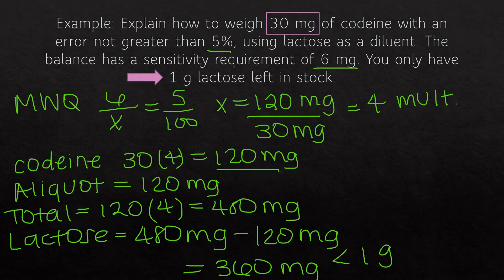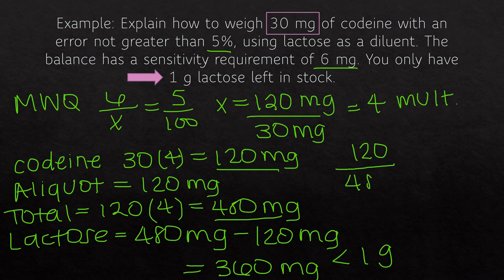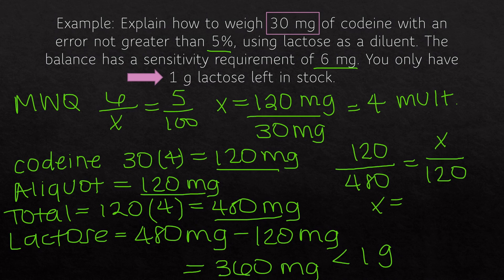Now the check: we use the total amount of drug in the dilution — 120 milligrams of codeine — over the total mixture of 480 milligrams, set equal to x over the aliquot of 120 milligrams. Cross-multiplying gives x equals 30, which checks out because that is the amount of codeine we needed to weigh out.